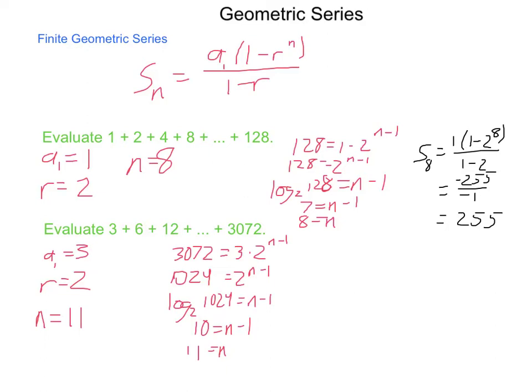Now evaluating the sum, we have s sub 11 equals 3 times 1 minus 2 to the 11th divided by 1 minus 2. Same denominator of negative 1. 1 minus 2 to the 11th gives us negative 2047. Multiplying this by 3 and dividing by negative 1 gives us 6141. There is the sum of these 11 terms. This is simply a matter of following the formula.